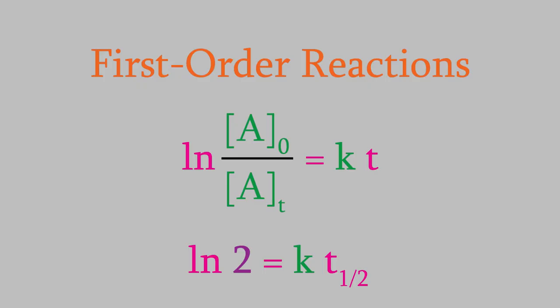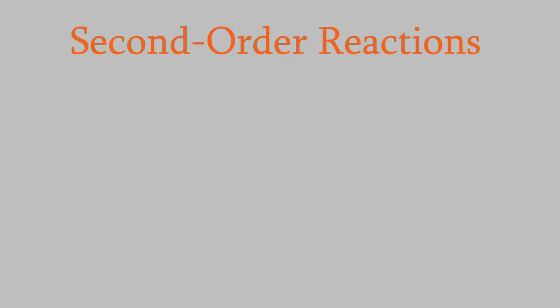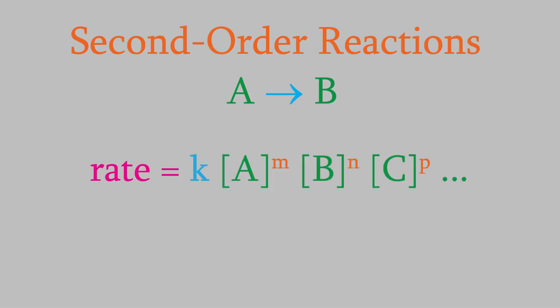Now we've looked pretty thoroughly at first-order reactions — let's move on to second-order reactions. As I mentioned earlier, these are very common in nature. Suppose we have a simple second-order reaction where we start with one reactant and get one product. What will be the rate law for this reaction? From our previous discussion, you know the rate law will be rate equals k times the concentration of each reactant raised to an exponent. Since this reaction only has one reactant, A will be the only reactant in the rate law. And since we know this is a second-order reaction, the exponent is 2.